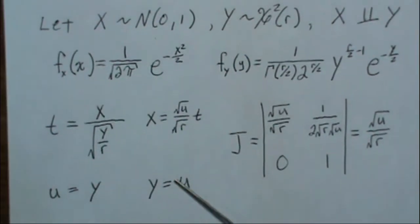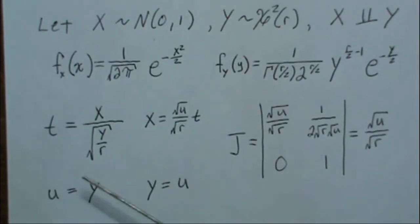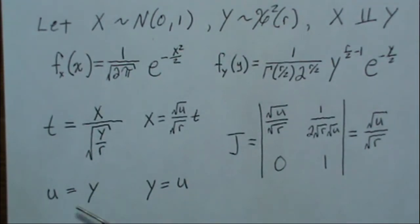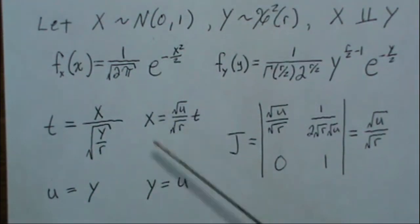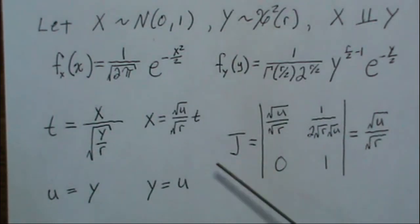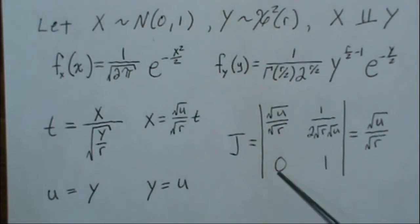But whenever we go from R to R² space, we have to map to R² space. We have to create a dummy variable Y, or u equal to Y, so we can go R to R². The Jacobian of the transformation is a partial of X and Y.